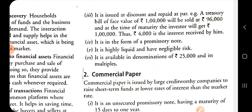For example, a Treasury bill of face value of Rs. 1 lakh will be sold at Rs. 96,000 and at the time of maturity the investor will get Rs. 1 lakh. Thus Rs. 4,000 is the interest received. There is no explicit interest rate; the interest is the difference between the issue price and the maturity price. It is a form of promissory note and is highly liquid with negligible risk.